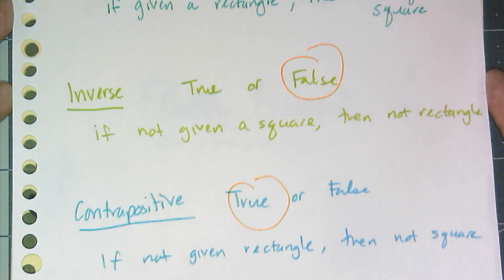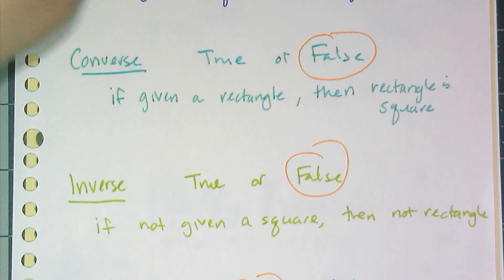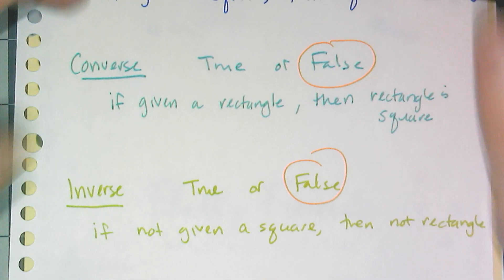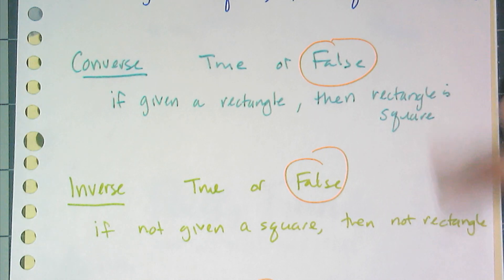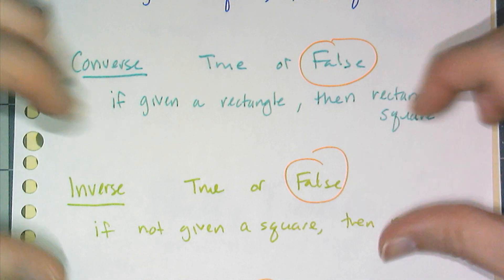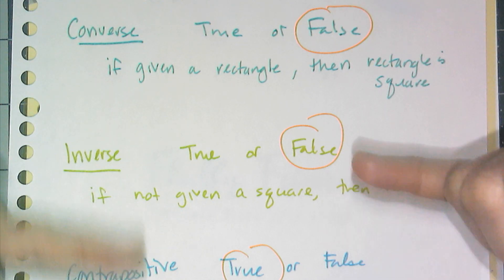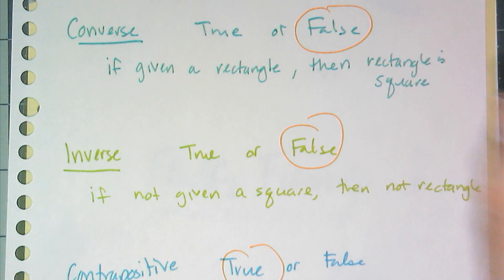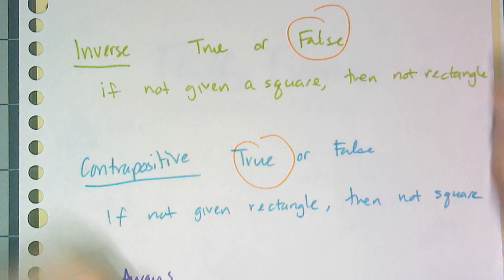Now, when we do true or false statements, if you have the original statement, like a conjecture you know is true, the converse may or may not be true, depending on the statement. The inverse may or may not be true, depending on the statement. So you have to think about these two, but the contrapositive is always going to be true, logically speaking.